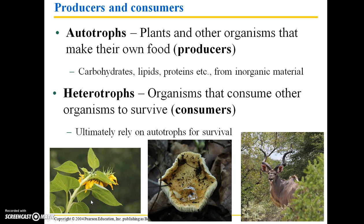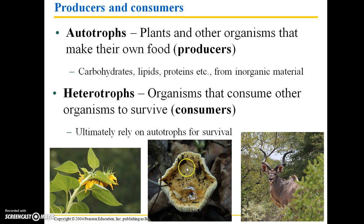Autotrophs are the basis of most food chains. We also have algae and some protists that are also able to make their own food. In contrast, heterotrophs are organisms that consume other organisms in order to survive, and these are also known as consumers. They ultimately rely on autotrophs for survival. This is true of ourselves and many other animals. Fungi cannot make their own food — they have to rely on microorganisms in the soil and dead and decaying matter. They can't photosynthesize.